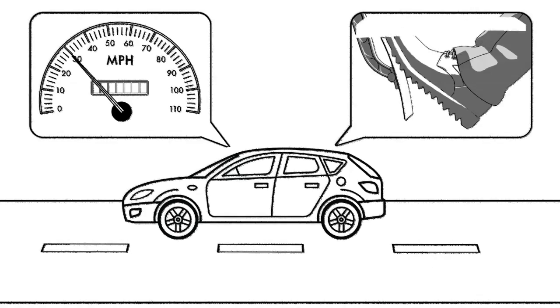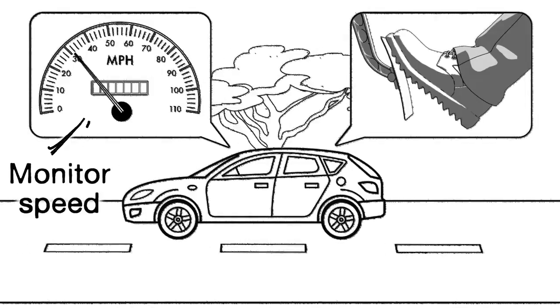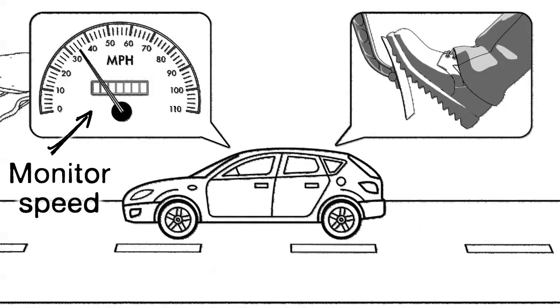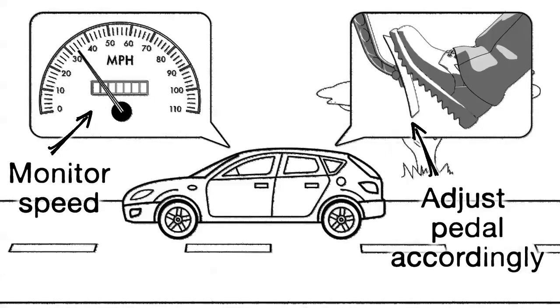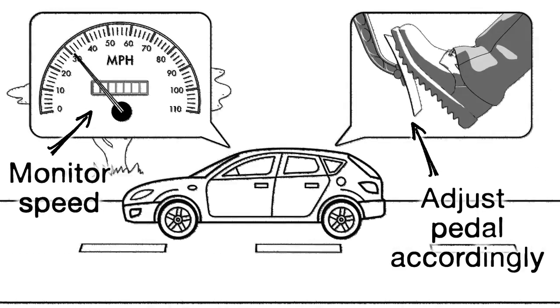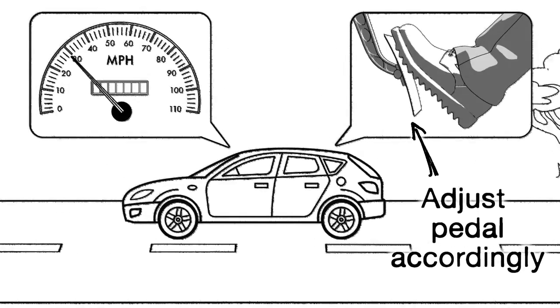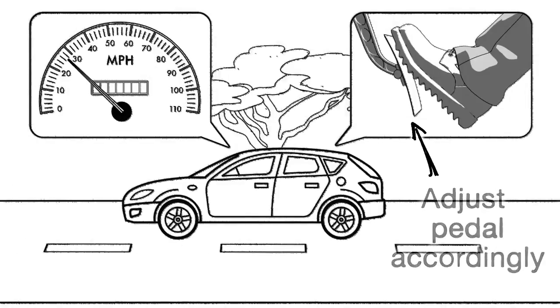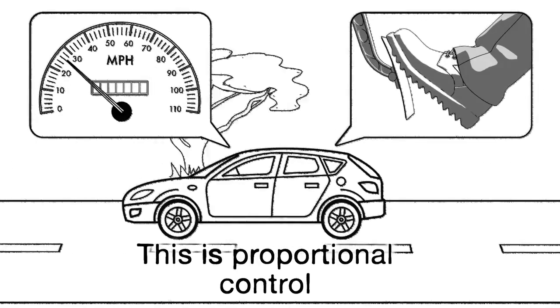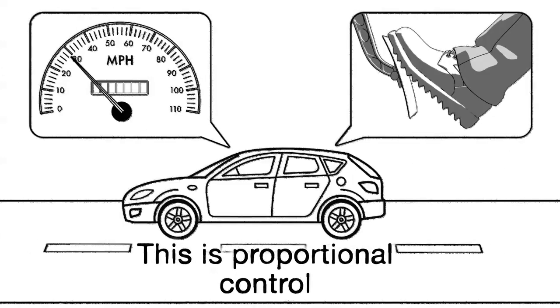How do they work? Imagine driving your car along a flat straight road trying to maintain 30 miles per hour. You alternately depress and release the accelerator pedal according to the speed on the speedometer. Here you form part of a feedback loop and are using proportional control to maintain your desired speed.